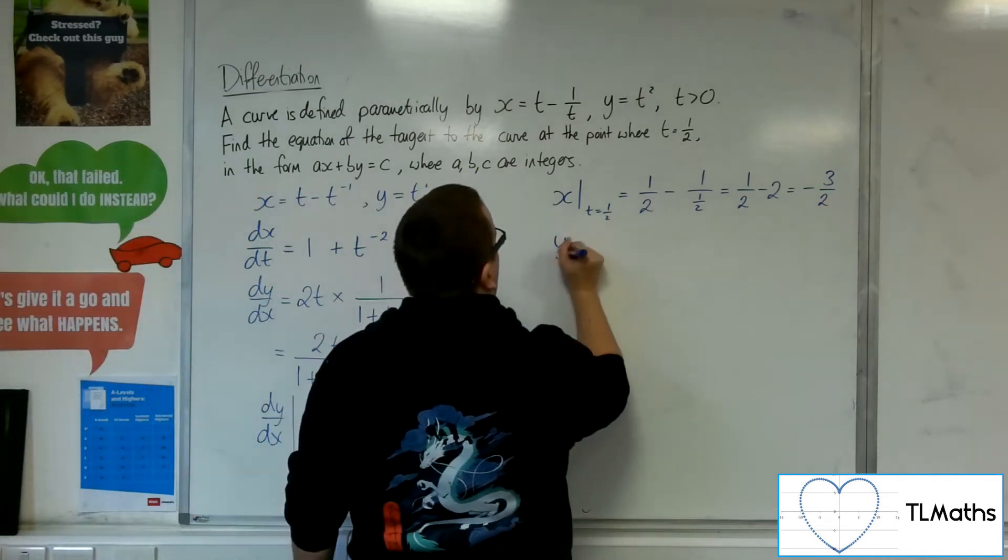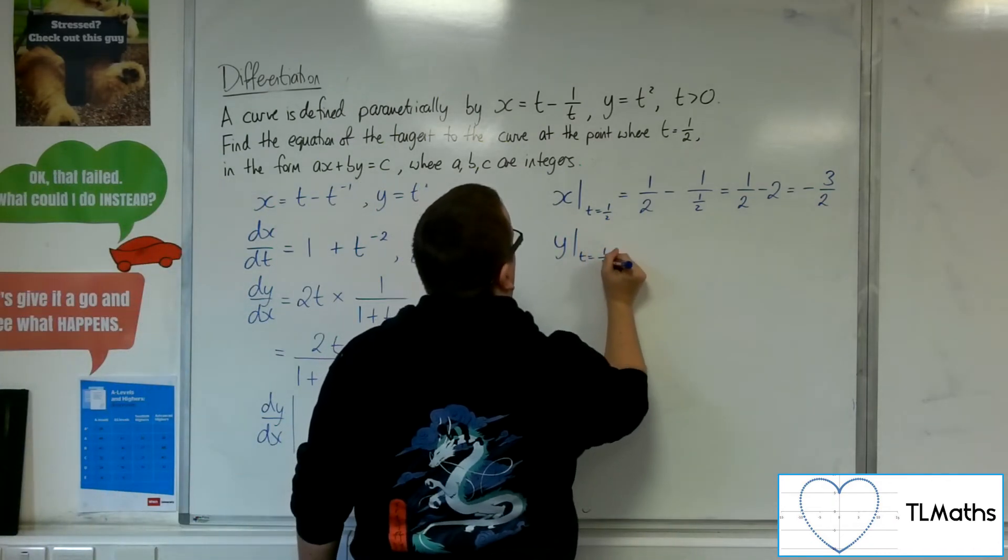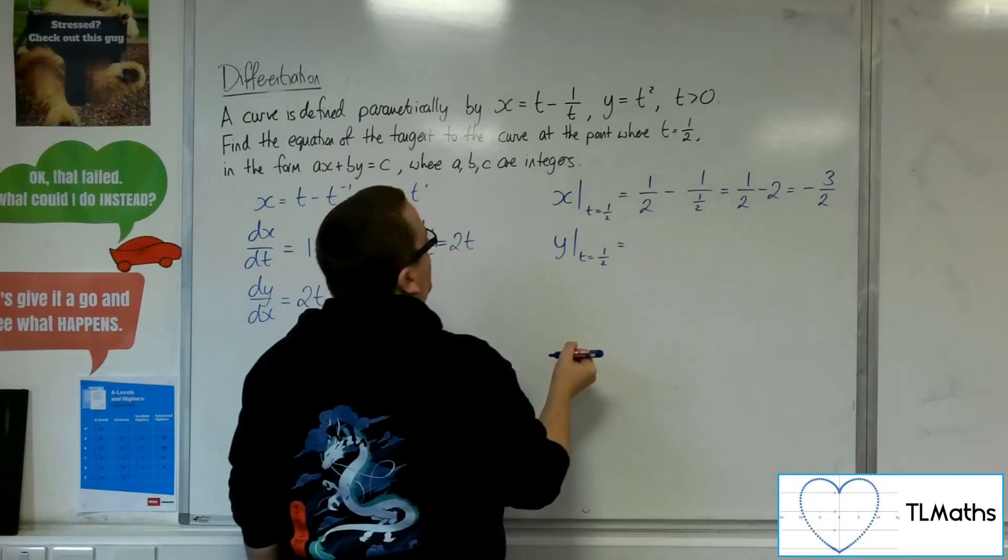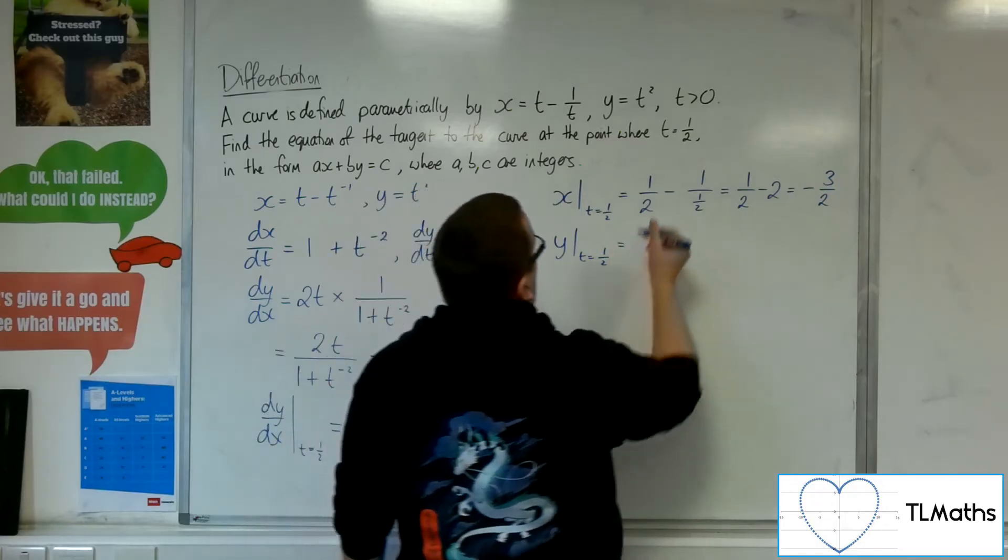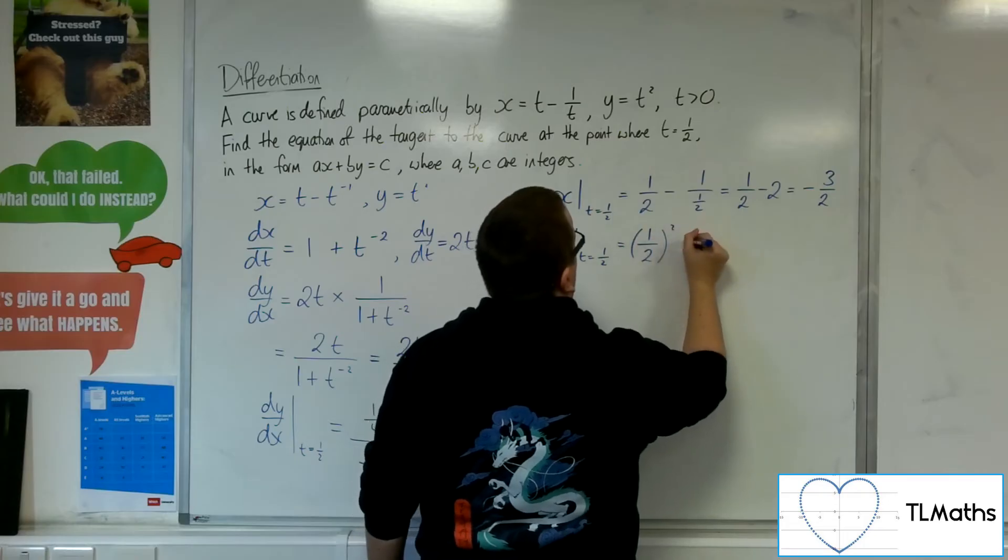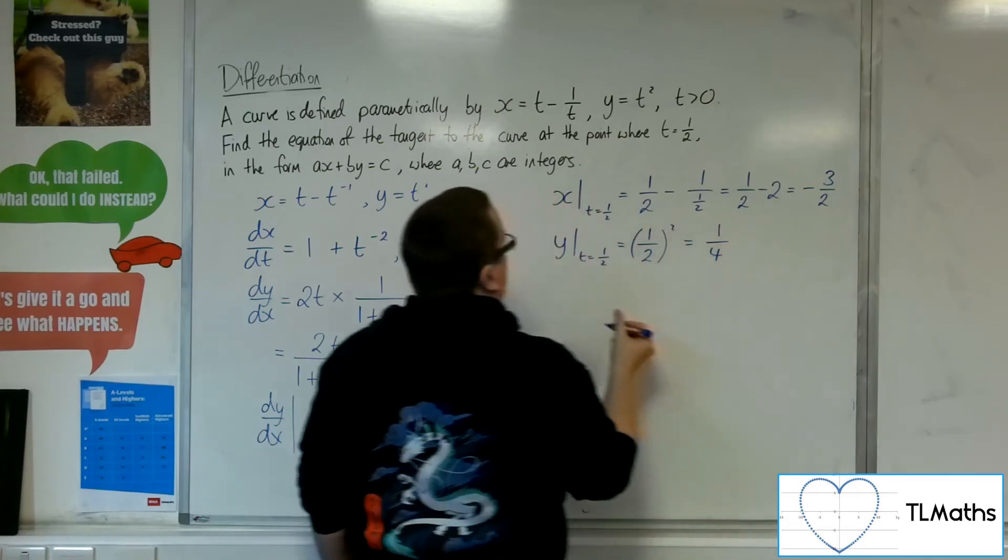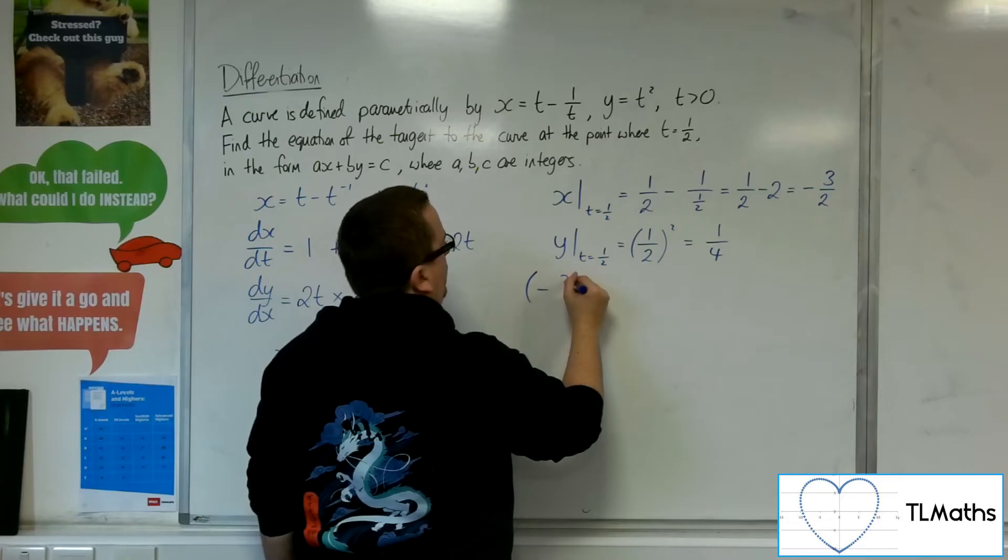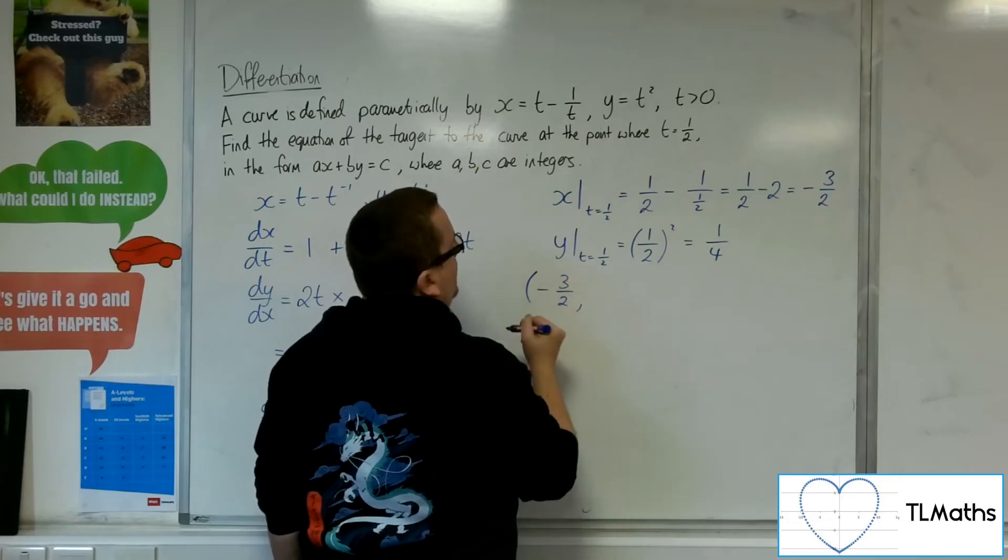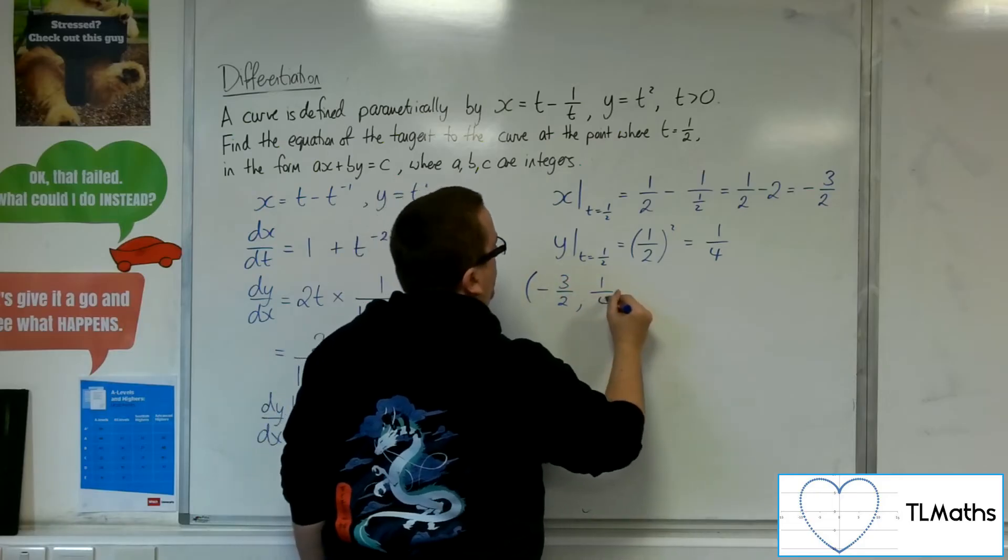Now, substituting t equals 1 half into the y coordinate. Getting the y coordinate is 1 half squared, which is a quarter. So, the coordinates of the point when t is 1 half is minus 3 halves, 1 quarter.